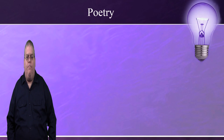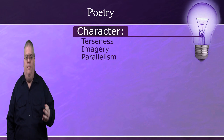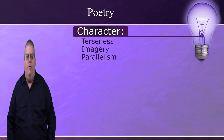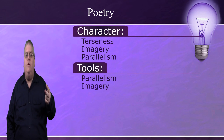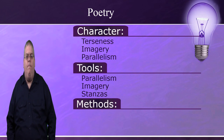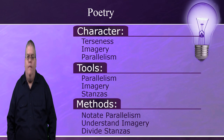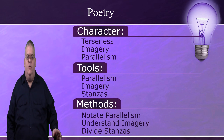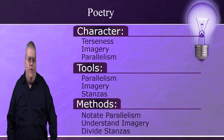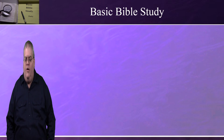Let's review. The characteristics of biblical poetry are terseness, imagery, and parallelism — you can use the acronym TIP to help you remember them. The tools are parallelism, imagery, and stanzas. And the methods for biblical poetry are notating the parallelism, understanding the imagery, and dividing the stanzas. That is our general overview of biblical poetry and how we can read it well. There's much more about biblical poetry that will be explored in the advanced Bible study course. The next section is the biblical poetry example to supplement this section, and then after that we'll start looking more closely at the genres in the New Testament, starting with epistles.